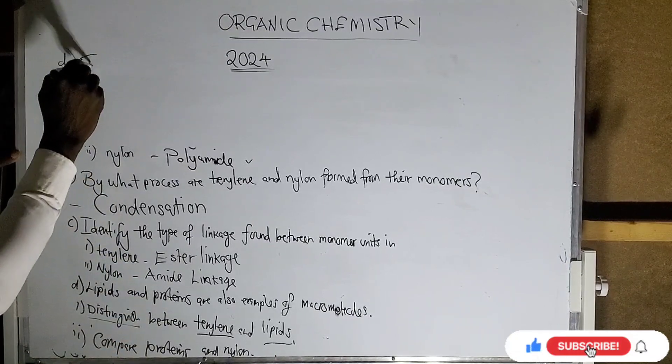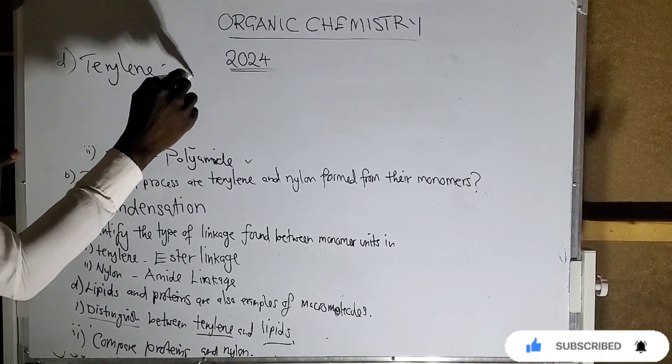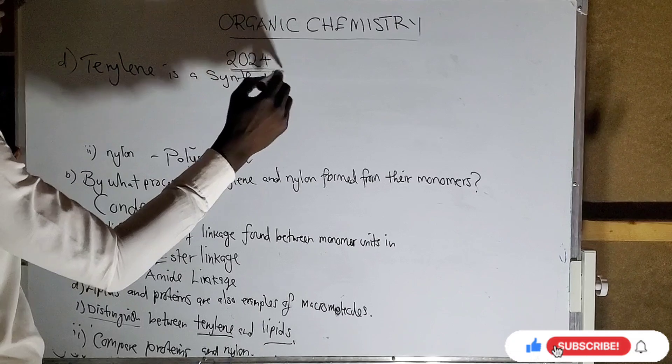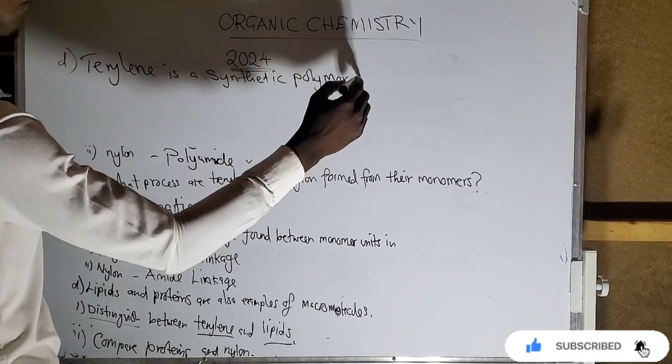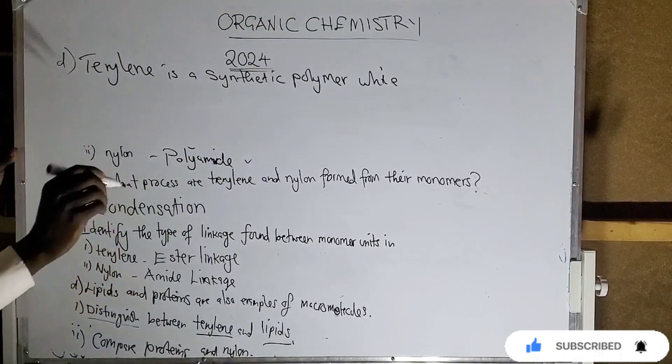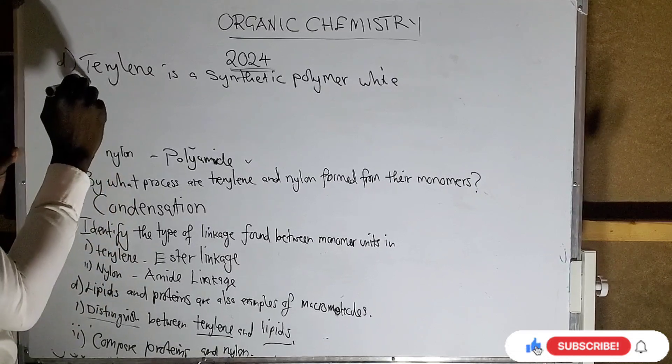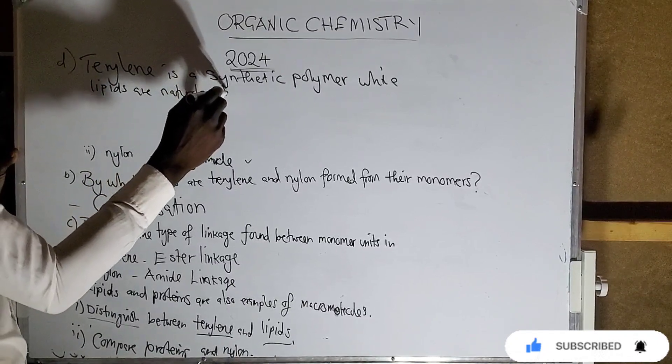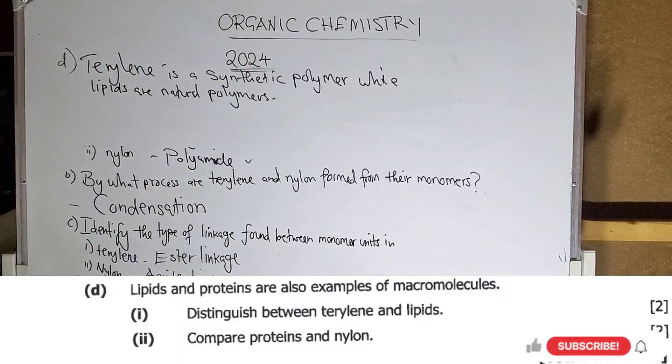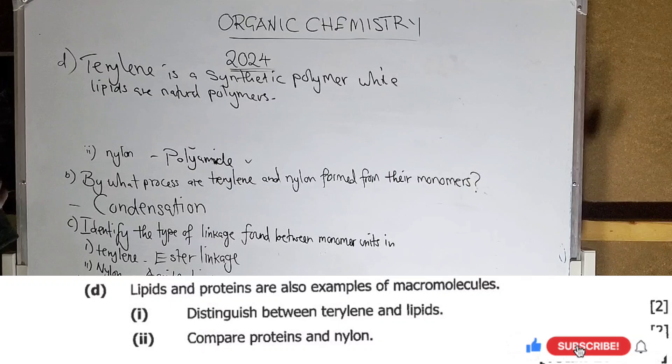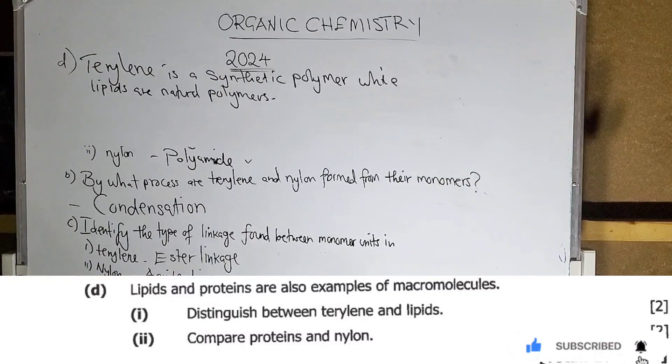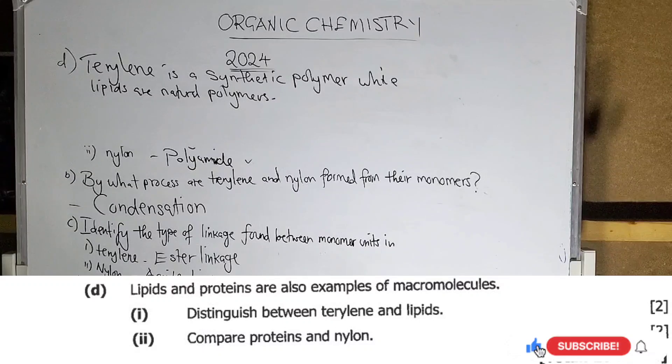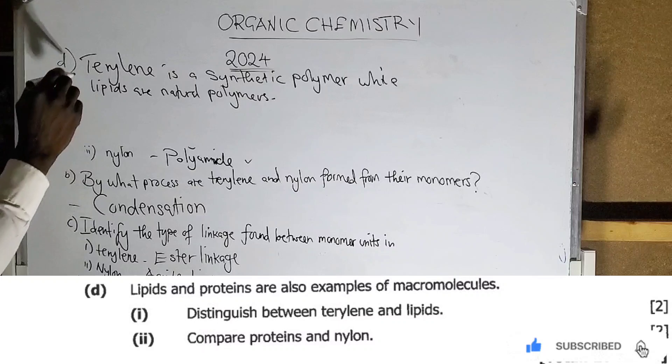So, terylene - I have to differentiate. So you can see terylene is a synthetic polymer while lipids, they are natural polymers. Simple. So that's the difference between terylene and lipids. But if your question was to compare, they both have ester linkage.